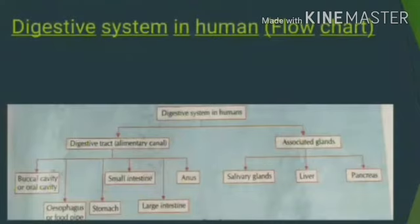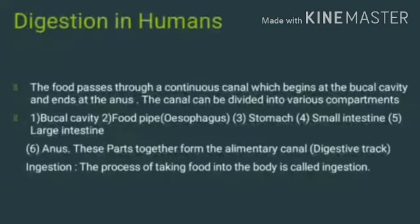The digestive system is divided mainly into two types: the digestive tract, that is the alimentary canal, and the associated glands. The glands present in the digestive system include the buccal cavity, small intestine, anus, salivary glands, liver, and pancreas. These are all the glands involved in digestion. Digestion is the process where food passes through a continuous canal, which begins at the buccal cavity and ends at the anus.